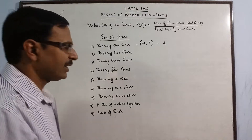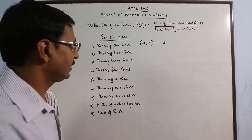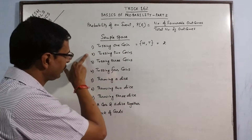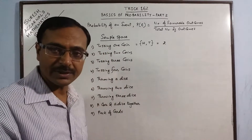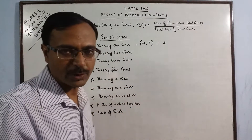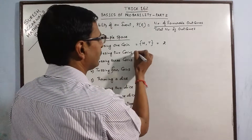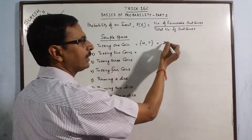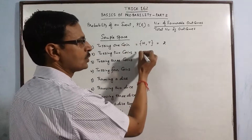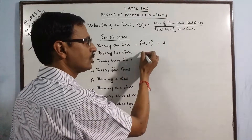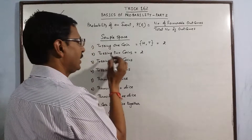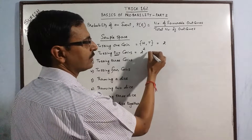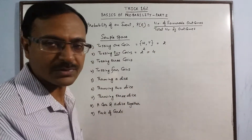When we understand that tossing one coin gives us only two results, we can find out how many results will be obtained by tossing two coins together, or three coins, or four coins, or even five coins. Here the number of coins is 2, and the number of outcomes for one coin is 2. So we write 2 raised to the power 2, which gives us 4 possible outcomes.